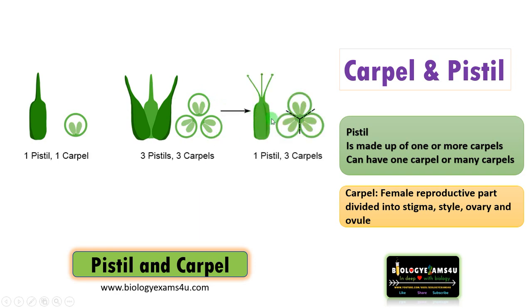In some cases these carpels may be united, forming a single pistil that is made up of three carpels. This united condition of carpels is called the syncarpous condition. So as you see, this pistil has three carpels. A pistil may be made up of a single carpel or many carpels.